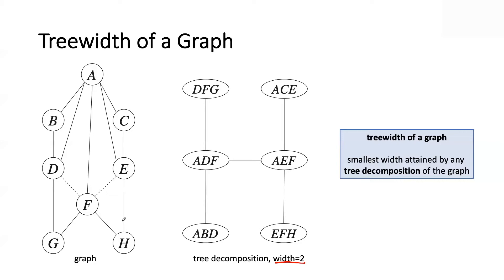This is not just a theoretical construct to define tree width — it is a data structure that many algorithms use. In fact, there are international competitions for constructing the best tree decompositions of graphs. The width of a tree decomposition is the largest cluster size minus 1. In this example, all clusters have size 3, so 3 minus 1 is 2. If you had a cluster with four variables, the width would be 3.